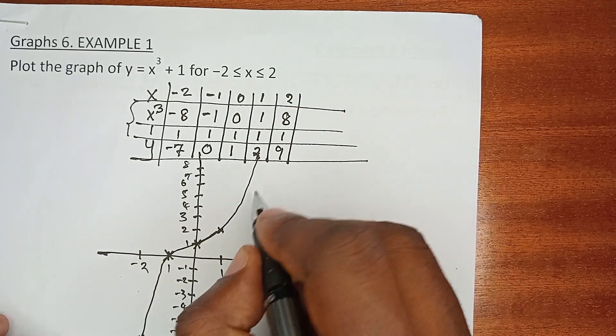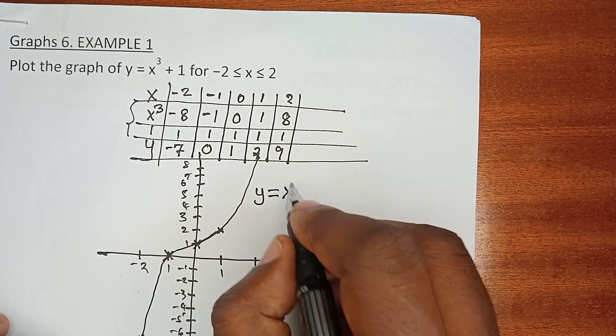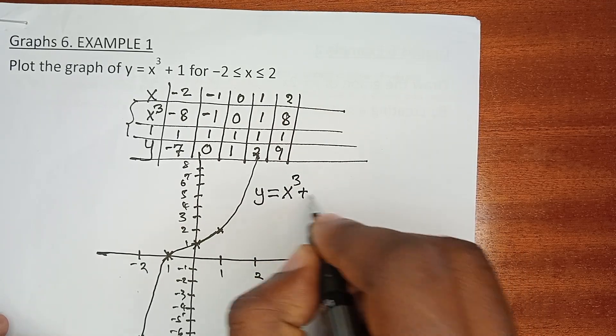The next thing, and the final thing we do, is to name that graph. Just give it a name: y equals x cubed plus 1, and that is it.